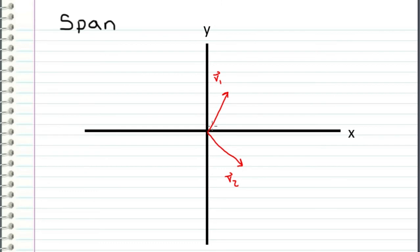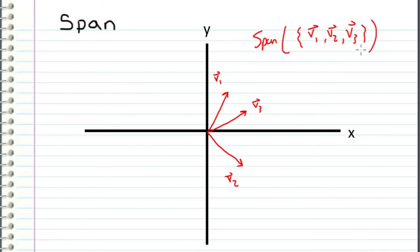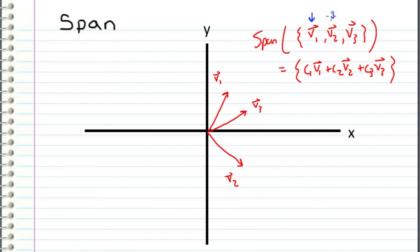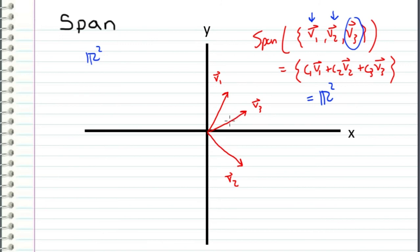Let's return to our 2D example but now add a third vector, v3. We want to find the span of the set containing v1, v2, and v3, which is all linear combinations with c1, c2, and c3 as any values. We already established that the span of just v1 and v2 equals all of R2. So if we throw in v3, how does that affect our answer? It actually doesn't — the span of these three vectors is still R2. Adding v3 doesn't change anything because v3 is linearly dependent with v1 and v2.